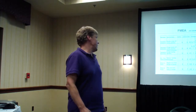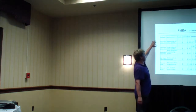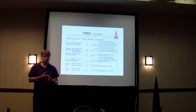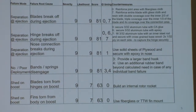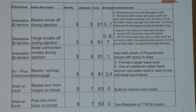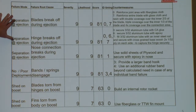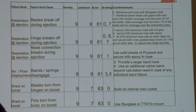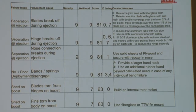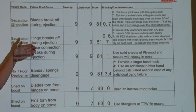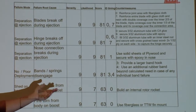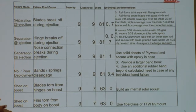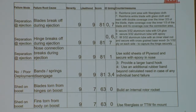Here's a sample of the FMEA. Basically, what all could go wrong — and the biggest concerns I had in building this were shred on boost, separation and ejection, and poor deployment. You look at the different types of failure modes and think: what would cause that? Separation and ejection — why would it separate? Well, one way was because the blades broke off, or another way might be because the hinge broke. Why would it shed on boost? Maybe the blades got torn off, or your hinge broke, or your fins tore from the body.